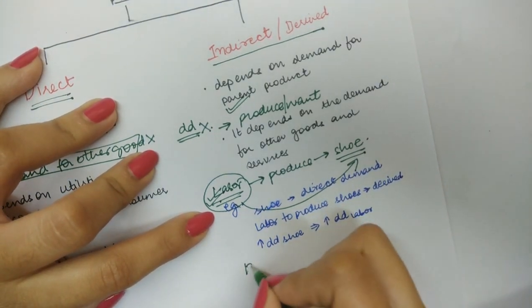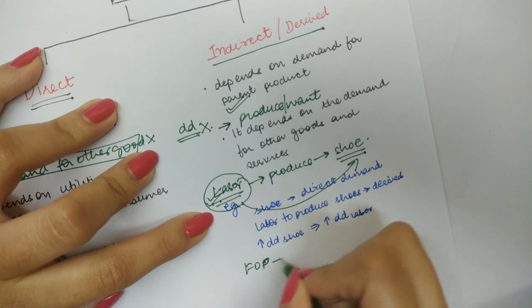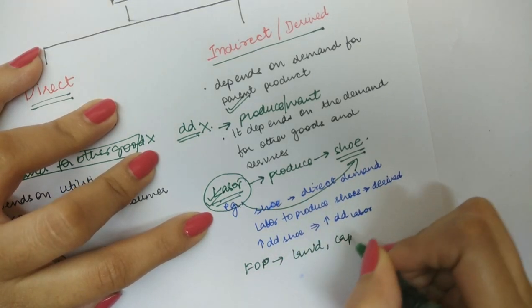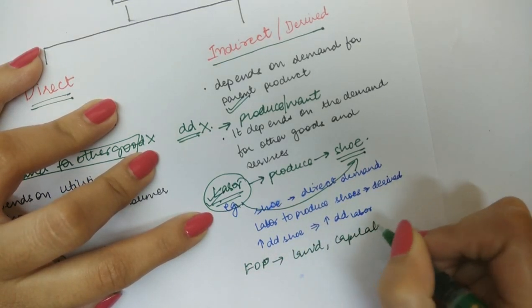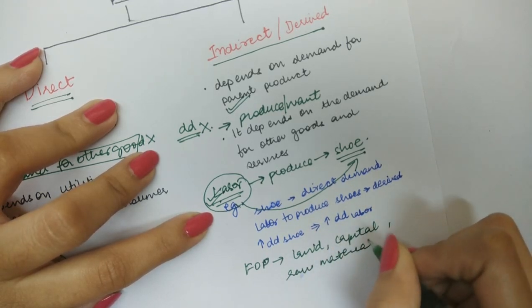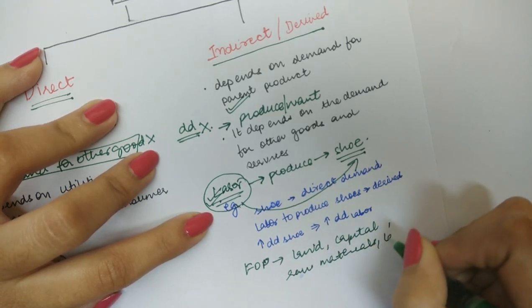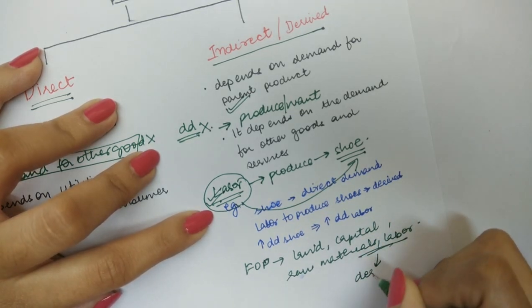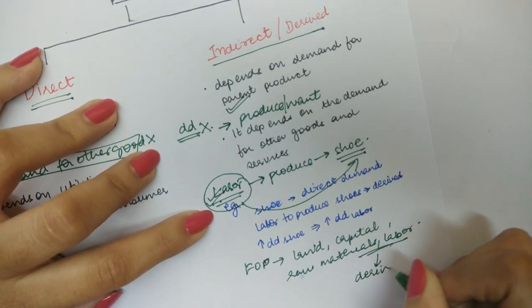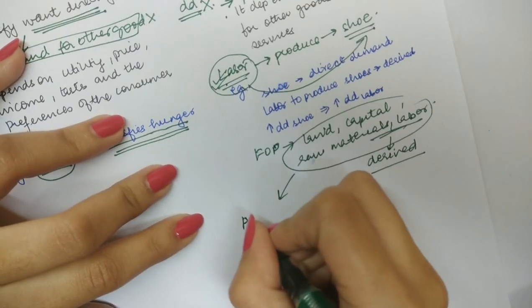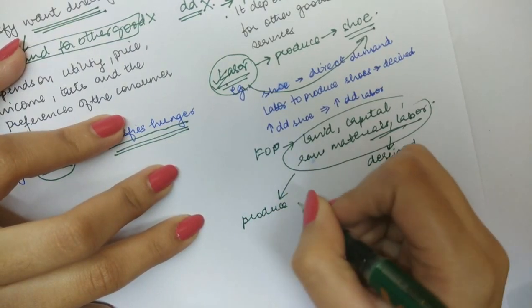All the factors of production — that is, land, capital, raw materials, and labor — are all derived demand. Why? Because you demand these goods in order to produce some other goods.